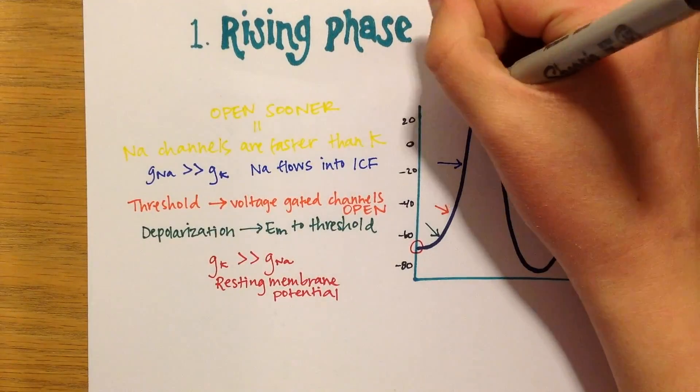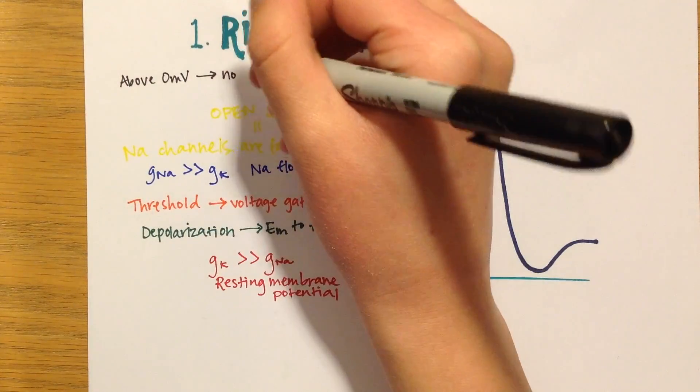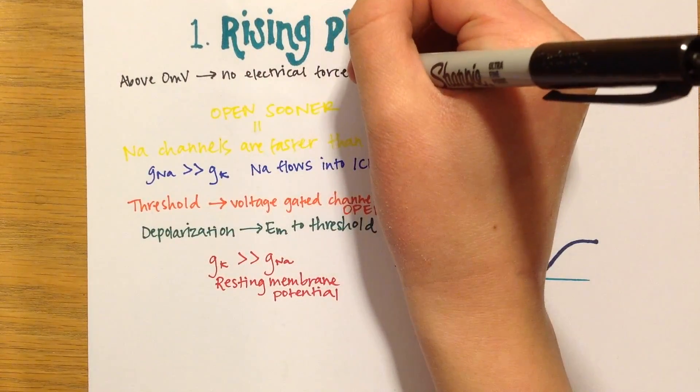Upon reaching 0 millivolts, there is no electrical driving force moving sodium in, but there is still a concentration gradient allowing sodium to enter the cell.